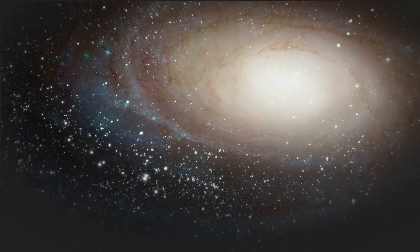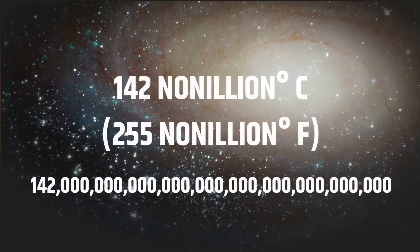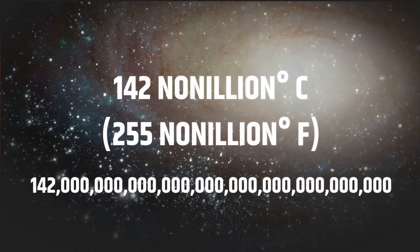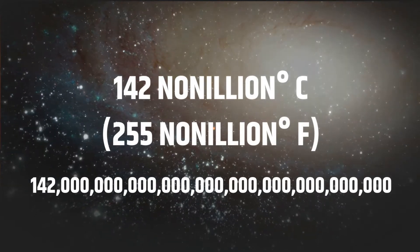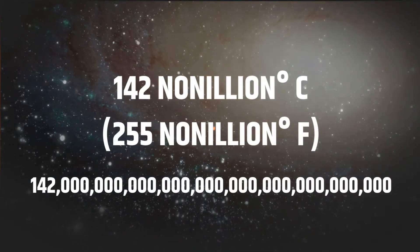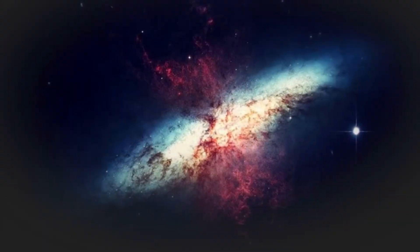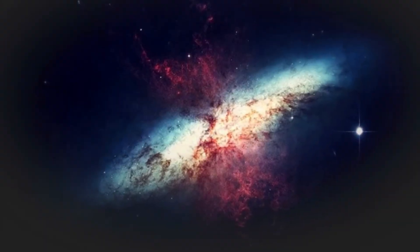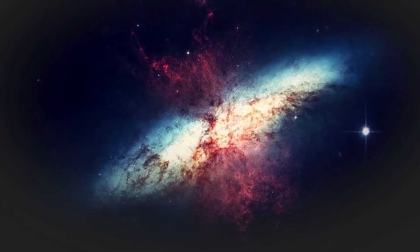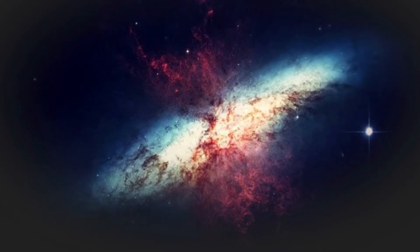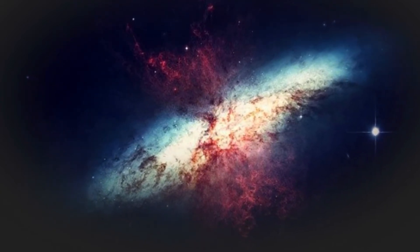What would happen if temperature reaches 142 nonillion degrees Celsius — a great number with 30 zeros? The answer may be weird, but to simplify the answer, we have to start from the lowest temperature in the universe.